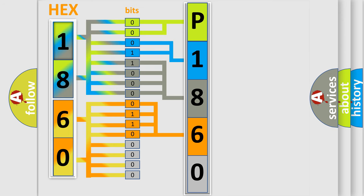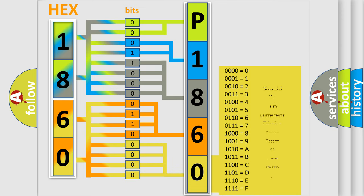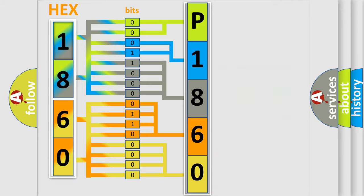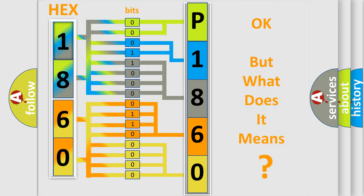A single byte conceals 256 possible combinations. We now know in what way the diagnostic tool translates the received information into a more comprehensible format. The number itself does not make sense to us if we cannot assign information about what it actually expresses.